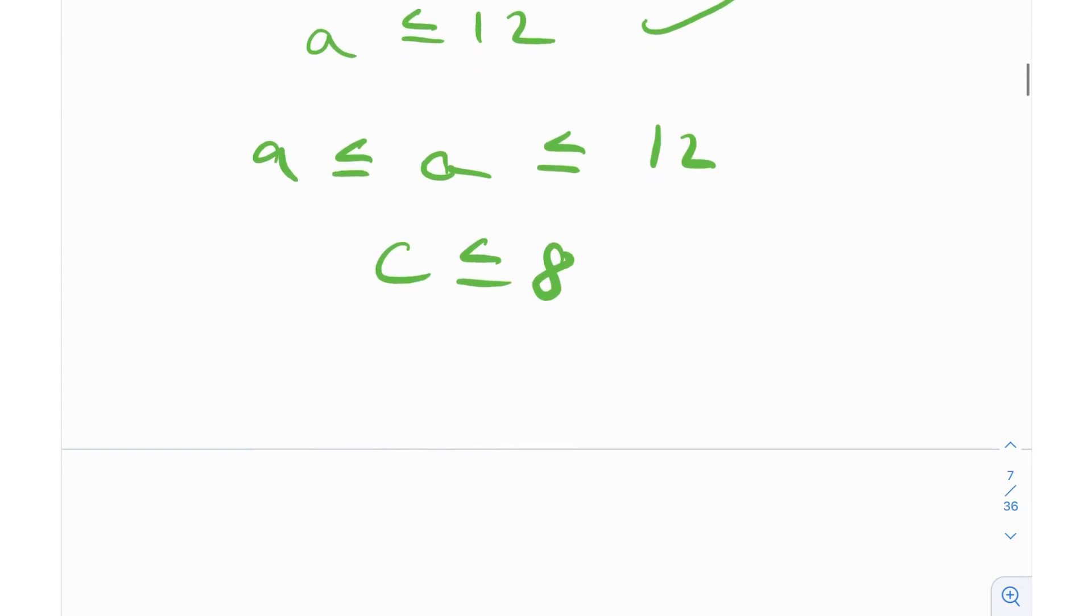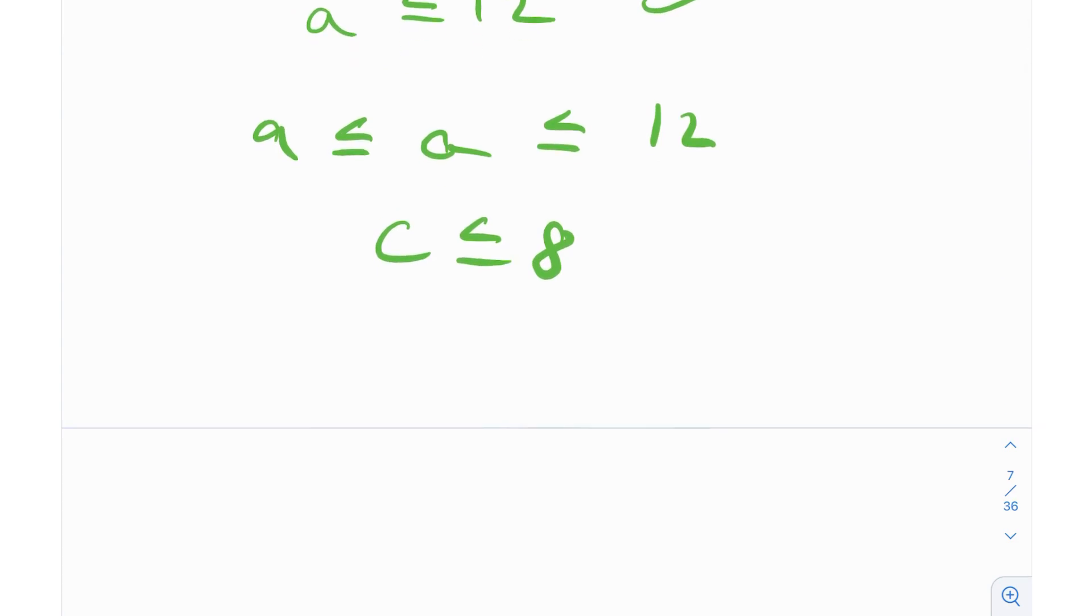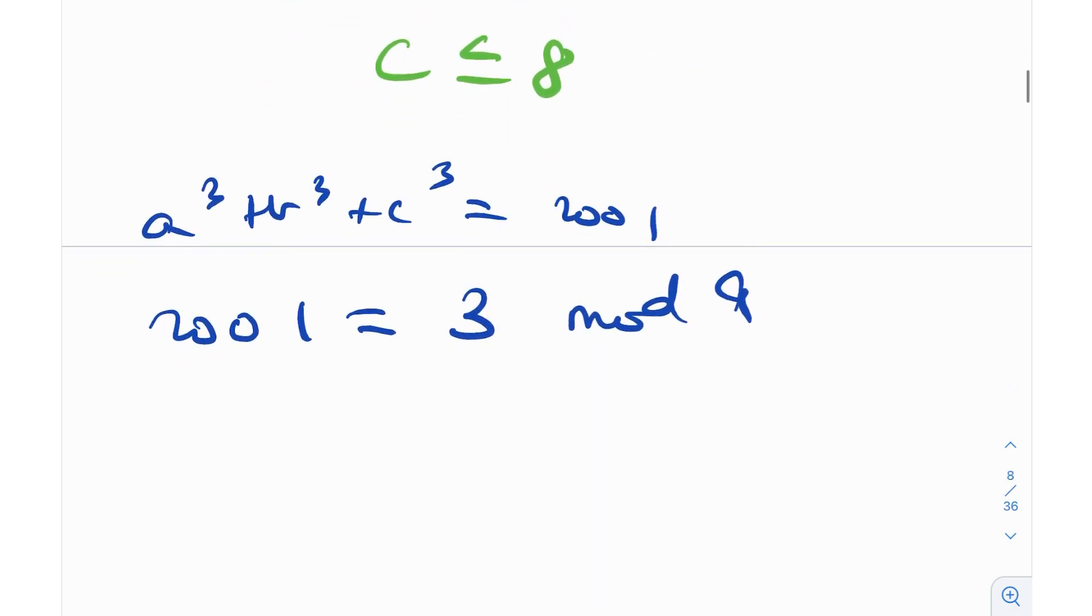How can we use that? Here's a tip: whenever we have cubes, it's very easy to use mod 9, and there's a reason for that. We have A³ + B³ + C³ = 2001, and 2001 so happens to be 3 mod 9. So we're trying to reduce mod 9. That's the key idea here.